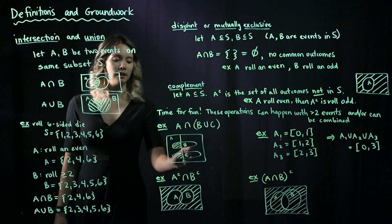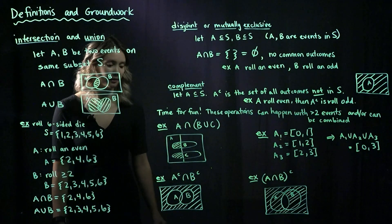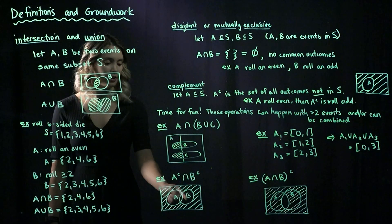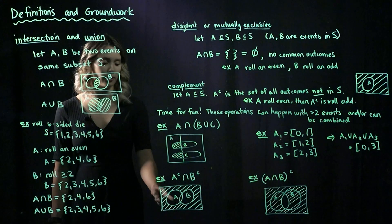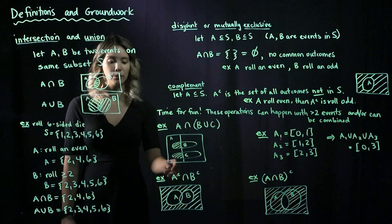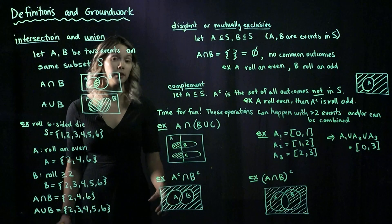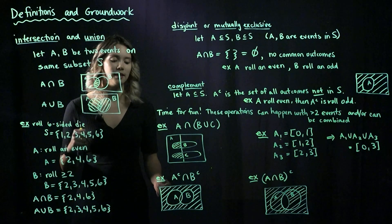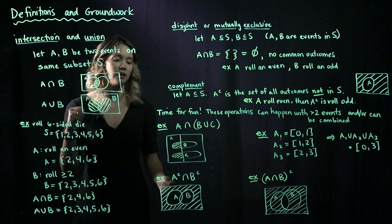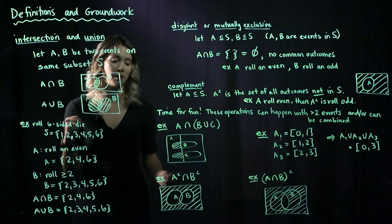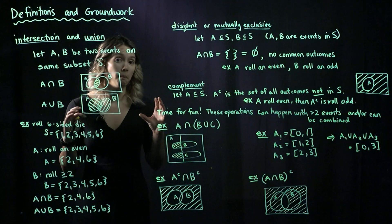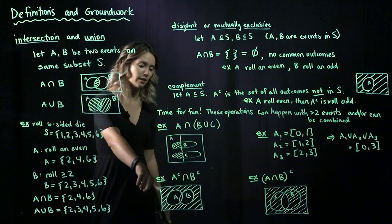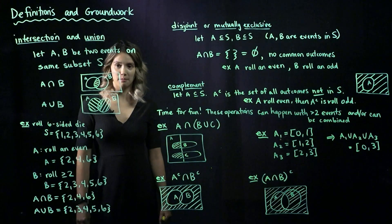Another example: A complement intersect B complement. Using the rectangle as the sample space with circles A and B, A complement is everything not in A, and B complement is everything not in B. So A complement intersect B complement is everything that is both not in A and not in B — the shaded region outside both circles.